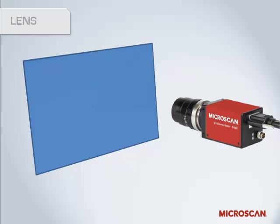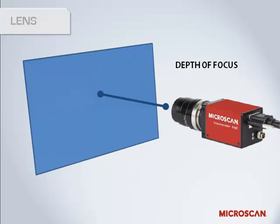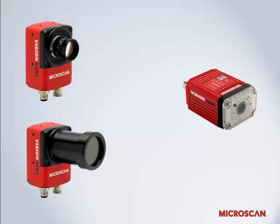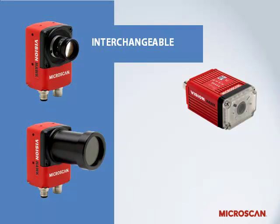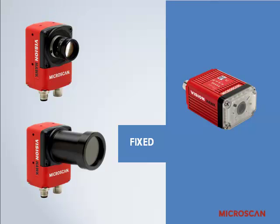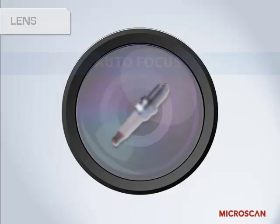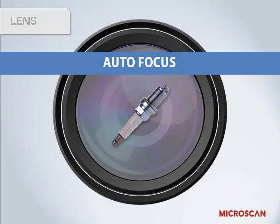Next, we'll discuss the lens. The purpose of the lens is to capture the image and deliver it to the sensor. The lens will determine your field of view, depth of focus, and your focal point. Generally, you'll find one of two different lens types in a vision system: an interchangeable lens or a fixed lens. Interchangeable lenses are typically C-mount or CS-mount, and the right combination of lens and extension tube will acquire the best possible image. A fixed lens is part of a fully integrated smart camera. Fixed lenses typically use autofocus — this could be a mechanically adjusting lens or even a liquid lens — and it will automatically focus on the part. Autofocus lenses usually have a fixed field of view at a given distance.